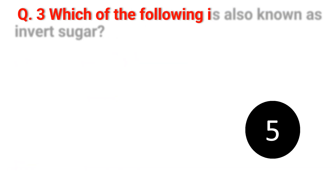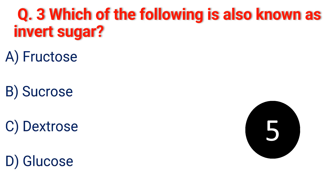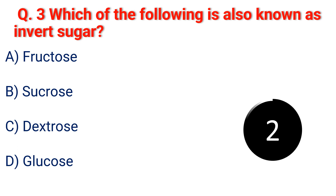Question 3. Which of the following is also known as invert sugar? A. Fructose. B. Sucrose. C. Dextrose. D. Glucose. The answer is B. Sucrose.